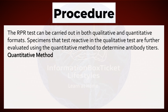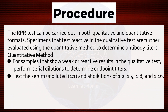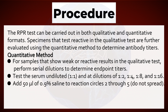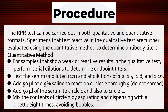Quantitative method: For samples that show weak or reactive results in the qualitative test, perform serial dilutions to determine endpoint titers. Test the serum undiluted (1:1) and at dilutions of 1:2, 1:4, 1:8, and 1:16. Add 50 microliters of 0.9% saline to reaction circles 2 through 5. Do not spread. Add 50 microliters of the serum to circle 1 and also to circle 2. Mix the contents of circle 2 by aspirating and dispensing with a pipette 8 times, avoiding bubbles.